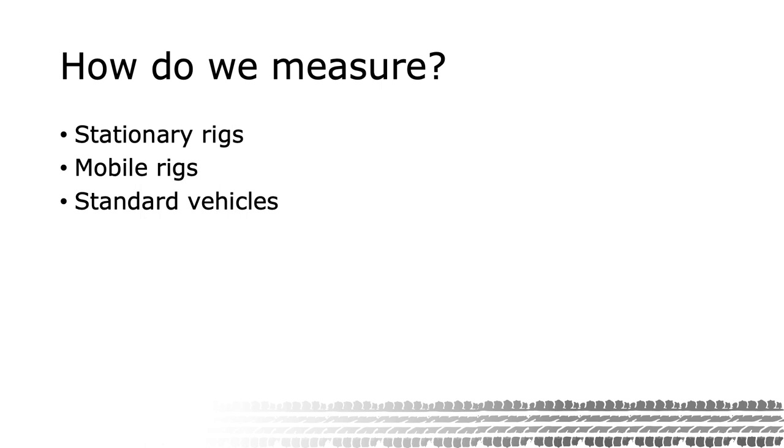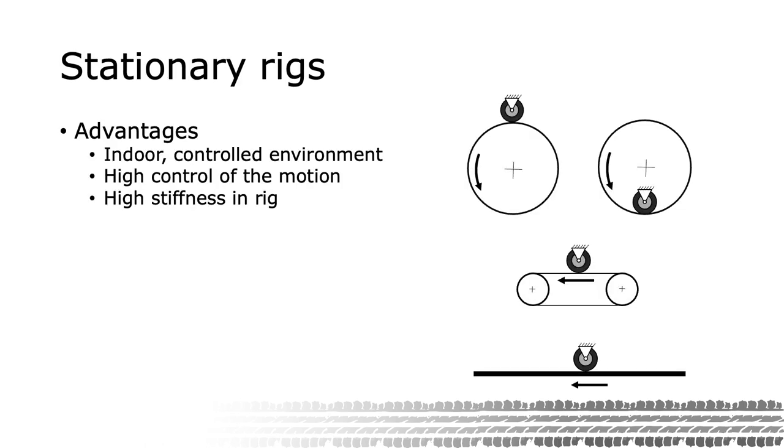We will now go a bit more into detail about these three categories. With stationary rigs, we are performing the tests indoor and the tire to be measured rotates fixed in space while the surface is in motion. As it is an indoor test environment, we can control the ambient temperature and possibly humidity. As it is a dedicated machine, the precision of the motion control is very good, making the measurements very predictable and repeatable.